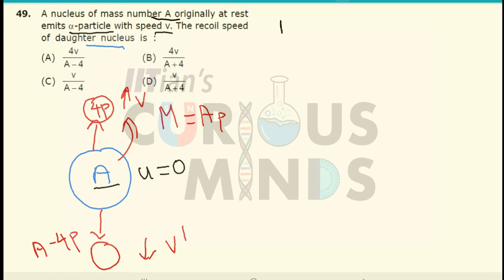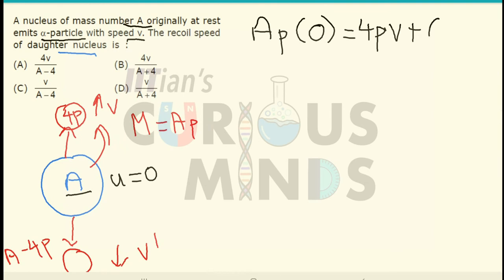M1, that is the mass, that is A into P was initially at 0. It will be equal to 4P into V plus A minus 4P into V dash.